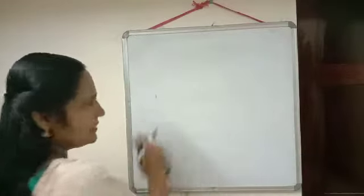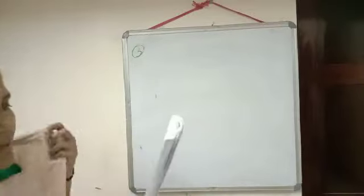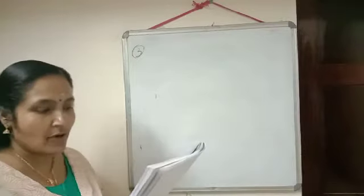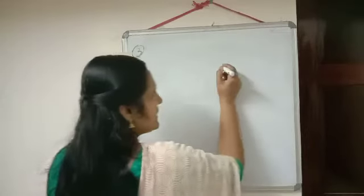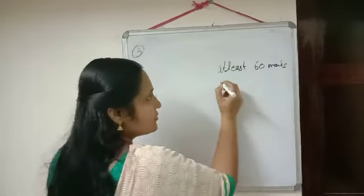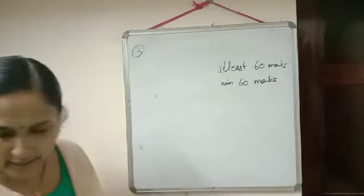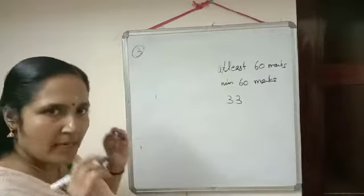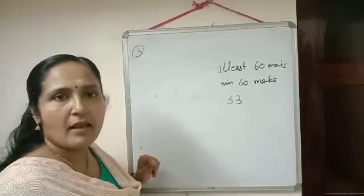Question number 3: Ravi obtained 72 and 76 marks in the first two unit tests. Find the minimum mark he should get in the third test to have an average of at least 60 marks. You should understand the meaning of 'at least 60': it means minimum 60. If the minimum passing mark is 33, then getting 33, 50, or 100 all count as passed. So 'at least 60' means average should be greater than or equal to 60.